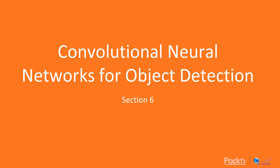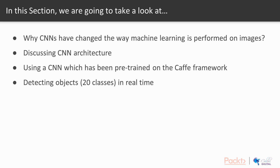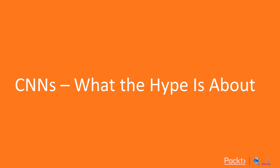Welcome to the sixth section of this course, in which we shall discover another way of object detection which is by far the most famous and probably the most accurate one. We will be looking at the use of convolutional neural networks for object detection, have a brief overview of what a convolutional neural network is, look at its architecture, and use a pre-trained convolutional neural network to detect multiple objects — trained on the CAFE framework for 20 different categories of everyday objects.